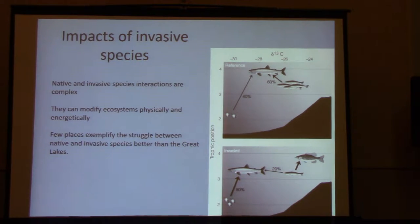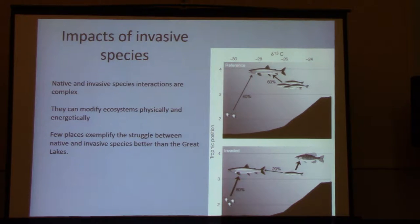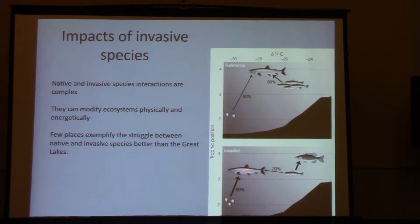The impacts of invasive species on native species is pretty complex. They can modify the habitat physically, and also they can alter the structure of the food web and the way energy flows. I like this figure because it illustrates pretty simply that second effect, where in the reference condition, lake trout fed on a mix of nearshore prey fish and also offshore zooplankton. However, in the invaded condition, with the establishment of rock bass depleting the nearshore fish population, lake trout shifted to a diet of predominantly pelagic zooplankton, and as a result their trophic level decreased.